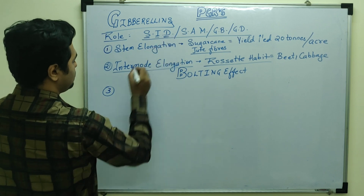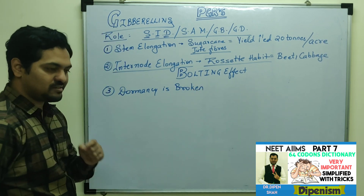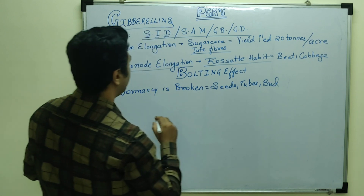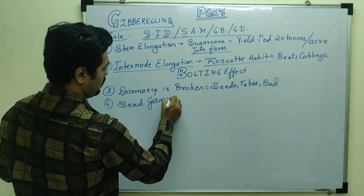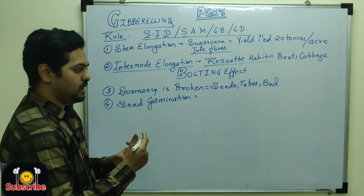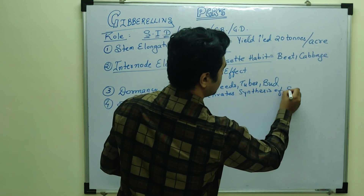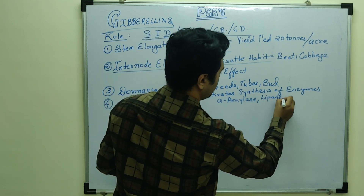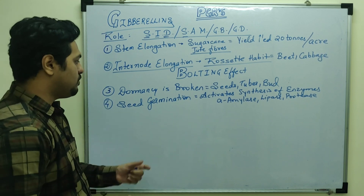The third role is that gibberellins break dormancy. Dormancy is a period of inactivity, and gibberellin application breaks dormancy in seeds, tubers, or buds. This also helps in seed germination, as these two roles are closely correlated. The mechanism involves activating the synthesis of certain enzymes like alpha-amylase, lipase, and protease, which release nutrients and energy to help in germination of the seed.